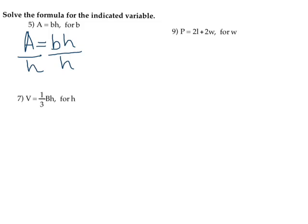And we have it lined out like this. H divided by H is 1. So the base, in this case, is equal to the area over, or divided by, the height. And that is our answer for that very first problem.